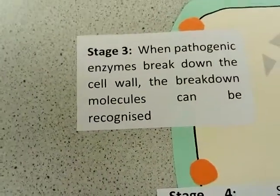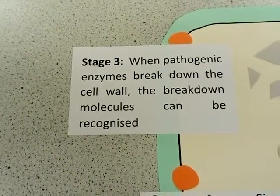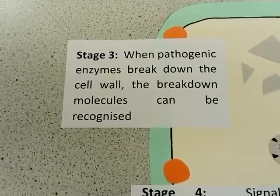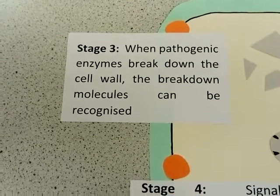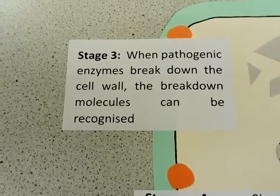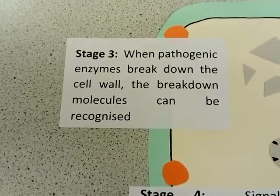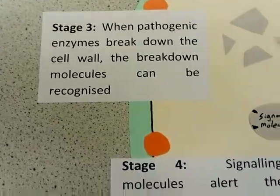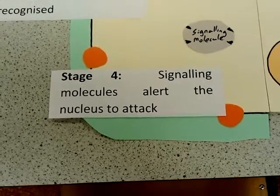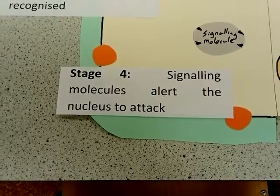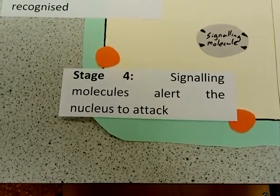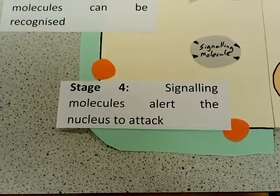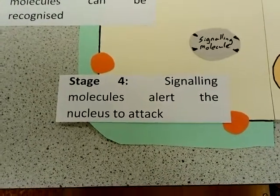The third stage involves pathogenic enzymes breaking down the cell wall. These broken down molecules from the cell wall are then recognised. This causes signalling molecules in the plant cell to go and alert the nucleus to the fact that the cell has been infected.